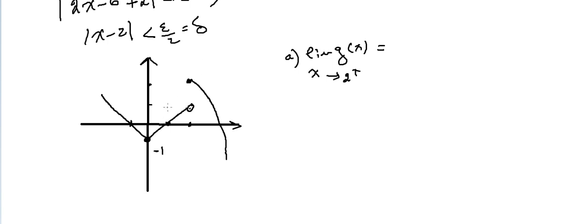This is the figure of a given function g(x), and we need to find the limit of g(x) as x approaches 2 plus. What is x approaches 2 plus? This is 2 here, and this is 2 plus, right? As x approaches 2 plus, what will be g(x)? It's 2.